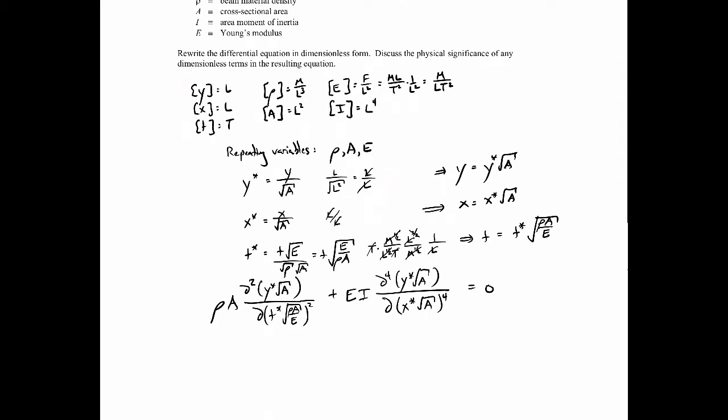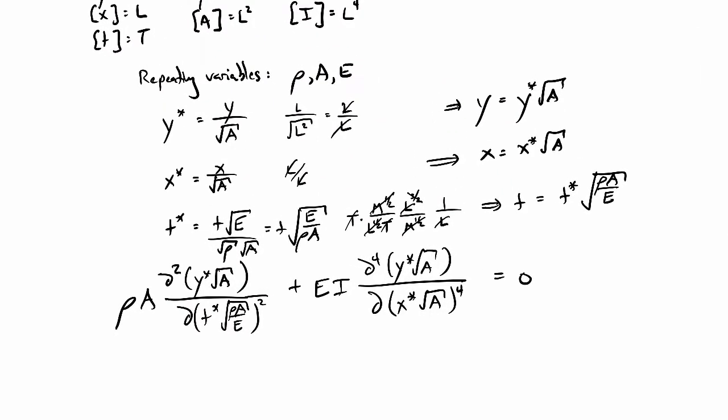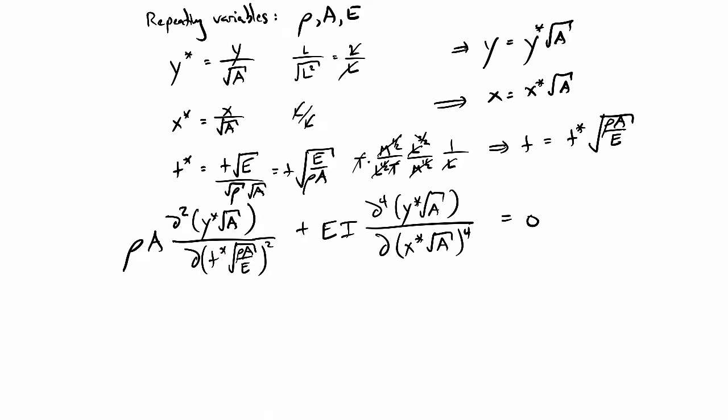All over dx to the fourth — so that'll be d(x star times square root of A) to the fourth power — all equal to zero. All I've done is rewrite the equation using dimensionless quantities times a factor that gives the original dimensional quantity the correct dimension. It's just the same equation but with the new variables y star, x star, and t star which are dimensionless quantities.